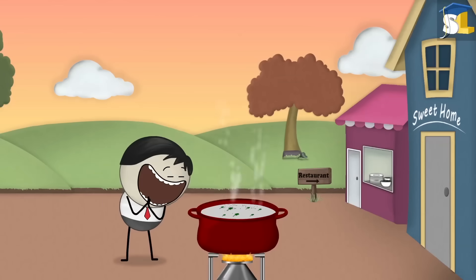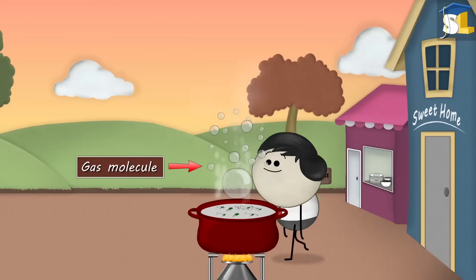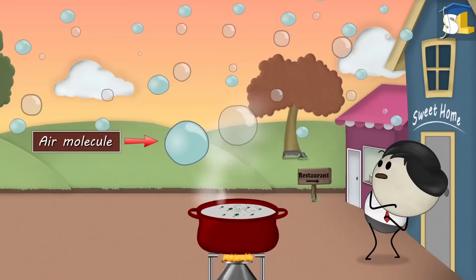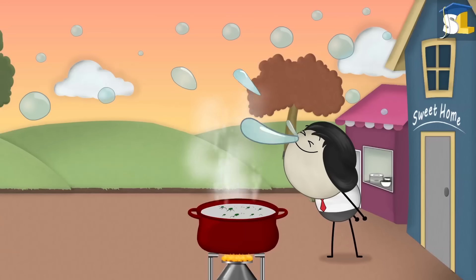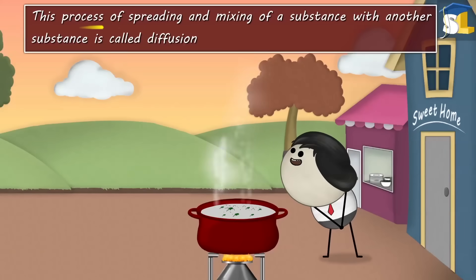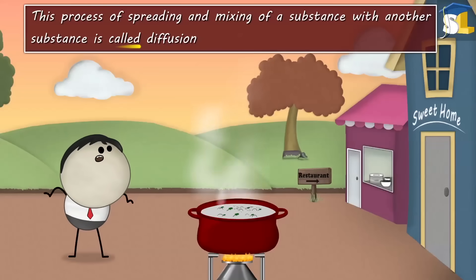Do you know how the smell of that food reached you? When food gets cooked, it releases some aromatic gases into the air. The molecules of these gases spread and mix with air molecules. When this air reaches our nose, we get the smell of food. This process of spreading and mixing of a substance with another substance is called diffusion.